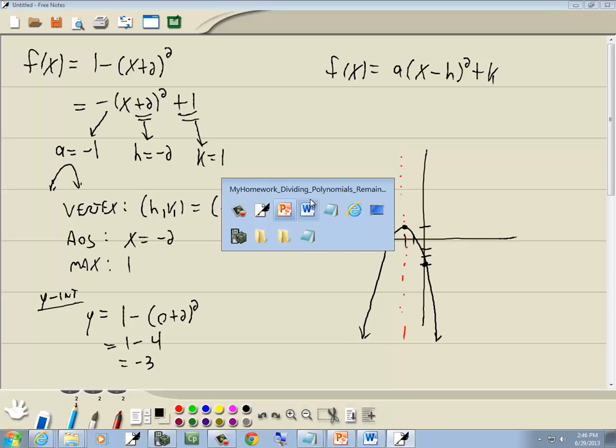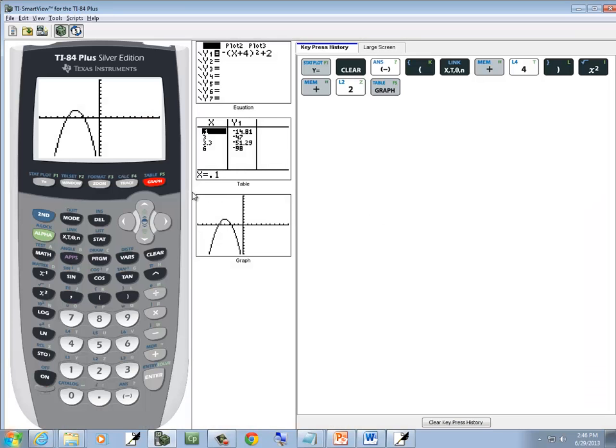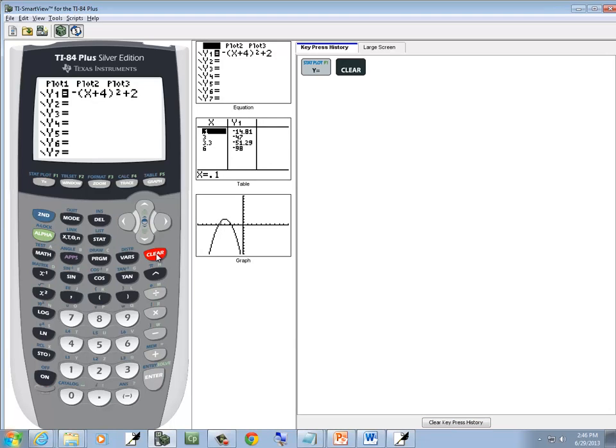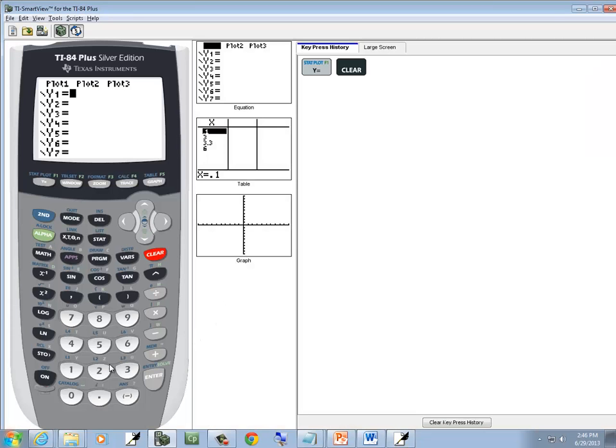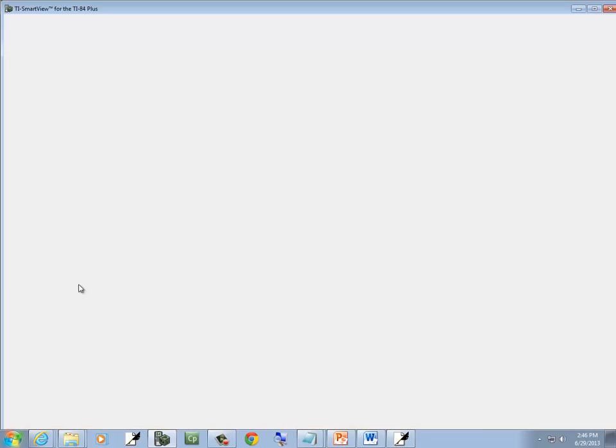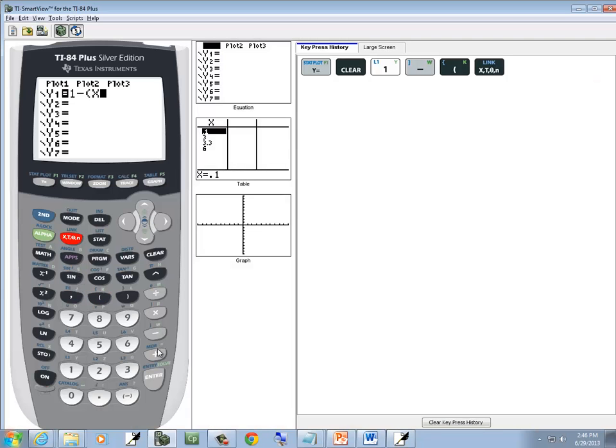Now again, feel free to use your graphing calculator for these. You don't have to do them by hand. Press my y equals, press clear. So, here, 1 minus, beginning parentheses, x plus 2, close parentheses, squared, and then graph.